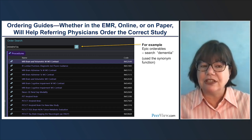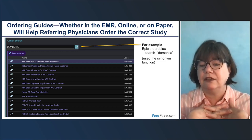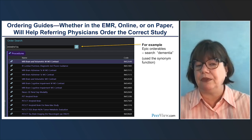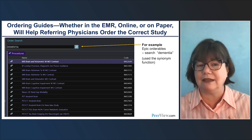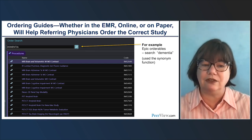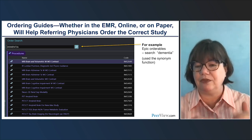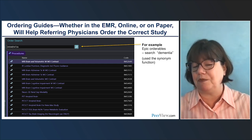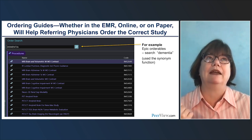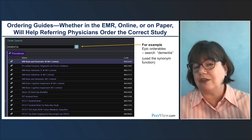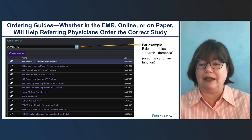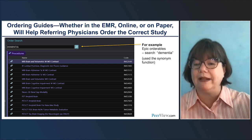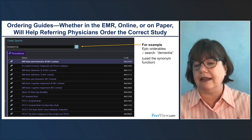Another tool to ensure consistency is an ordering guide. In Epic, we built a synonym so that typing 'dementia' brings up all the specific orders for this population: brain MRIs for baseline and monitoring, lumbar punctures, amyloid or tau PET, FDG PET — whatever they might need. This makes it easy for clinicians calling the reading room to order the right protocol. You can also use webpages or paper ordering guides. Think about building an ordering guide specific to your dementia patients.